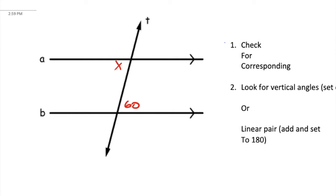The first one we see, here's 60. Fill in the corresponding. If this is the top right, corresponding will be here in the top right. Now you can see we have vertical angles. So x will equal 60. Very simple.